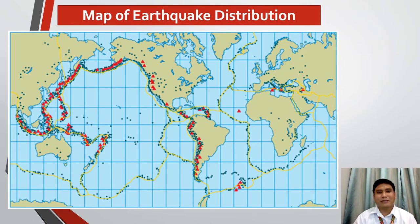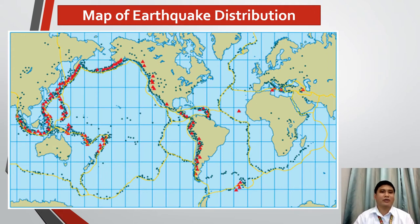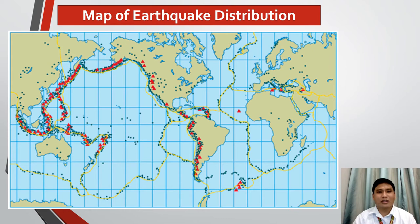In this first picture, you can see the map of earthquake distribution. It contains all of the recorded earthquakes for the past decades. Earthquakes are represented by blue dots, while those yellow lines signify weak earthquake activities.